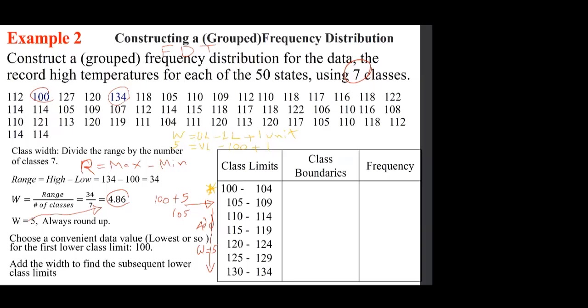So 104 plus 5 gives 109, plus 5, and we continue to the end. When we reach the end, make sure the last value — 134 — covers the largest data point. This confirms our class limits are correct. With the first column (class limits) and the frequency column filled in by tallying, the frequency distribution table is complete.